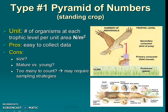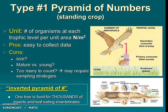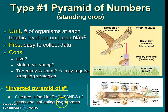There are some examples that look a little weird for pyramid of numbers, such as a rotting log — an example of an inverted pyramid. One rotting tree could be home to thousands of insects, herbivores, and leaf-eating invertebrates. So even though there's only one producer organism, there are tons of invertebrates, making it look like an upside-down triangle.